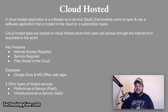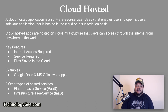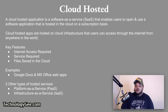Files are saved in the cloud — cloud hosted services save files to the cloud. With many apps you can also download your files, but the default location is in the cloud. Examples of cloud hosted applications include Google Docs and Microsoft Office web apps such as Word, Excel, and PowerPoint.